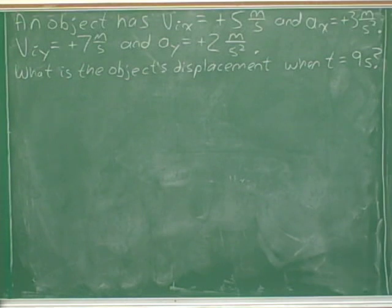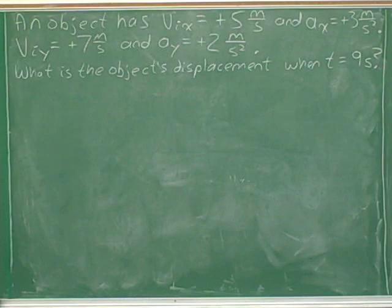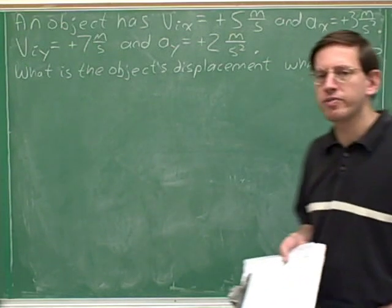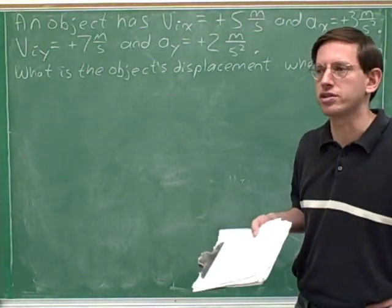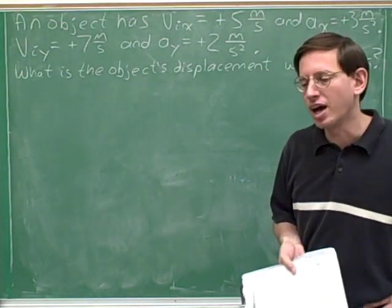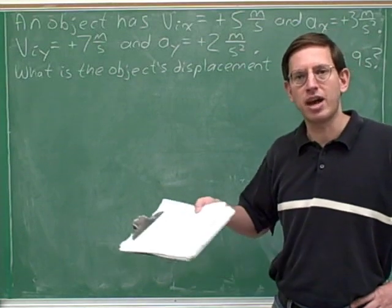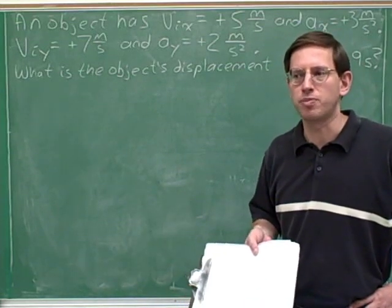The problem states: v-initial x = +5 m/s, a_x = +3 m/s², v-initial y = +7 m/s, a_y = +2 m/s². What is the object's displacement when t = 9 seconds? Please copy this into your notes and pause the video to try solving it. You should use the same systematic approach introduced in the previous two series.